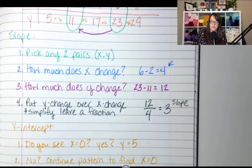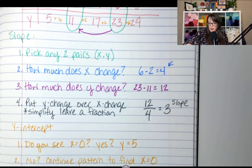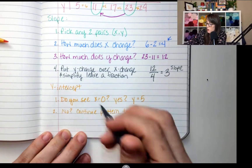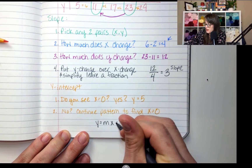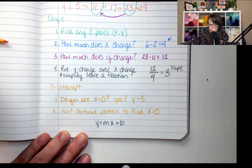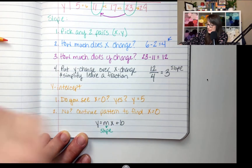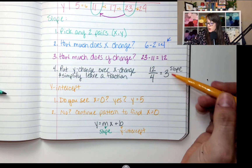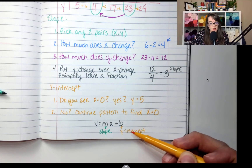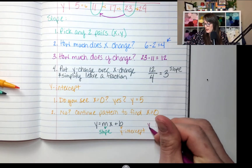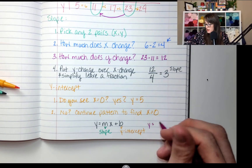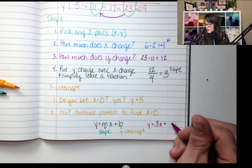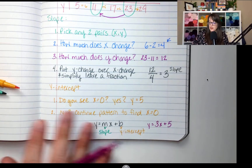For the most part, the patterns are pretty obvious. Now we're going to write an equation — maybe not today, maybe not tomorrow, but at some point we'll get there. The equation is y equals mx plus b, where m is slope and b is the y-intercept. So the slope goes where m is, and the y-intercept goes where b is. Our equation for this would be y equals 3x plus 5.